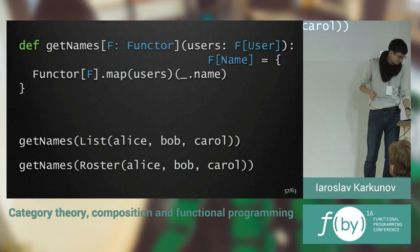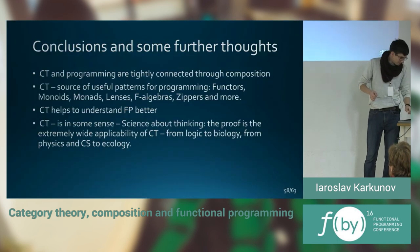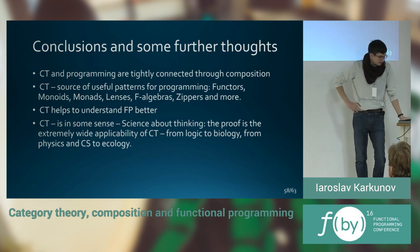And then we just could use that with functor sealed types, like list or roster. And one function will rule all the containers, and will give us a possibility to use, like, a name getter there.